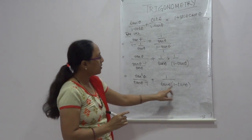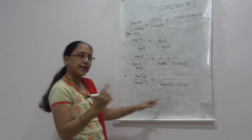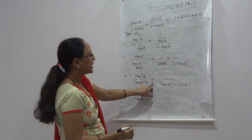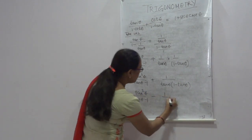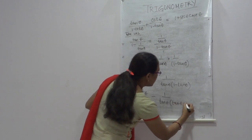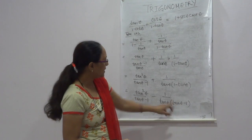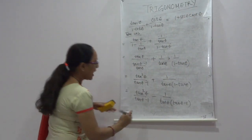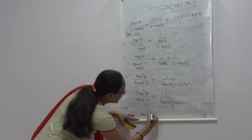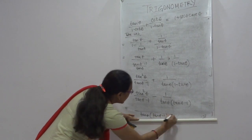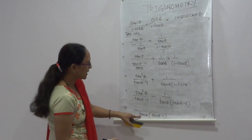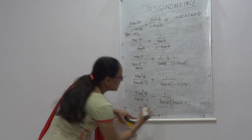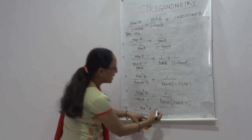To take LCM easily, notice we have (tanθ − 1) and (1 − tanθ). We change the sign: −(1 − tanθ) = (tanθ − 1). So the expression becomes tan²θ/(tanθ − 1) − 1/(tanθ − 1). Taking LCM as tanθ(tanθ − 1), the numerator becomes tan³θ − 1.